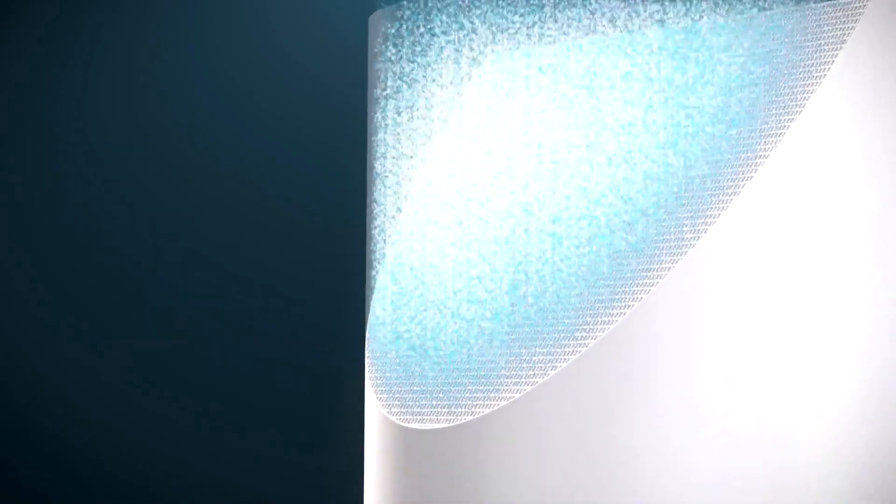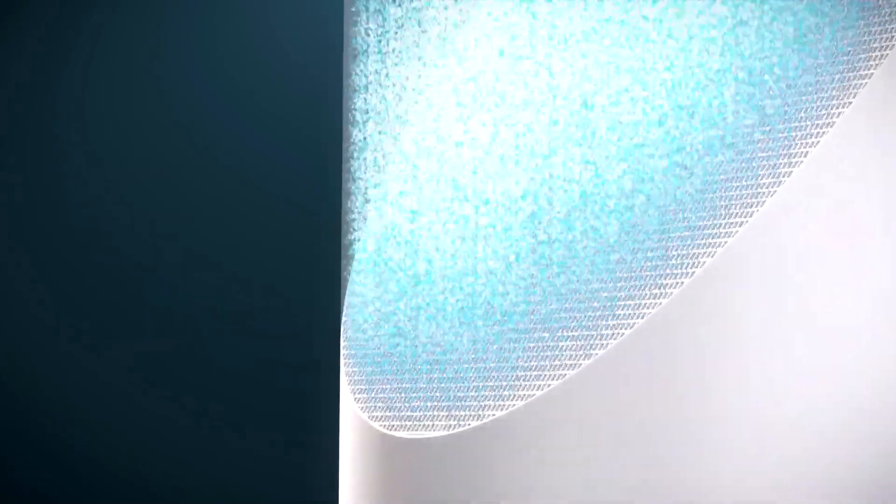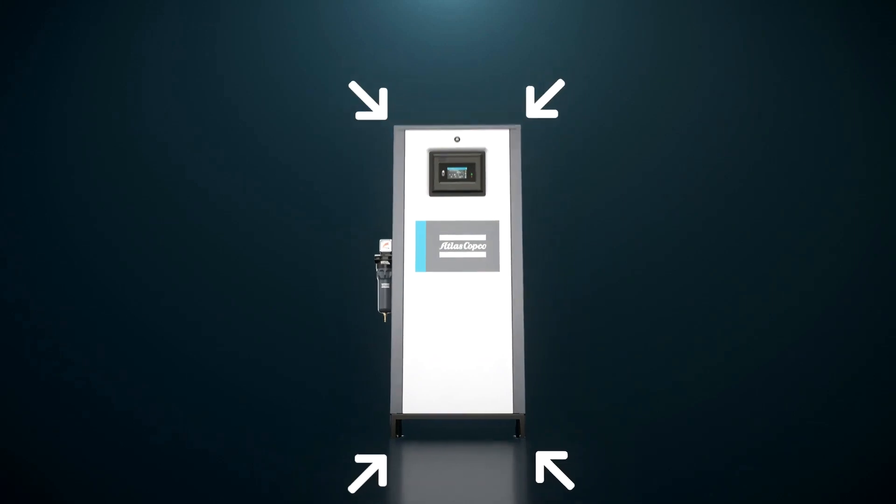Ceratis creates a lot of benefits for our customers since we have a very low pressure drop. It's a very energy efficient dryer unit. We can reduce the footprint because we are able to downsize our dryer units and there is also less maintenance required.